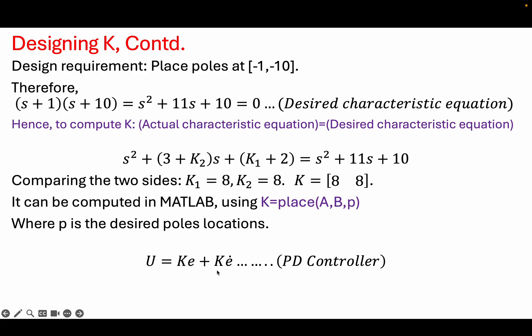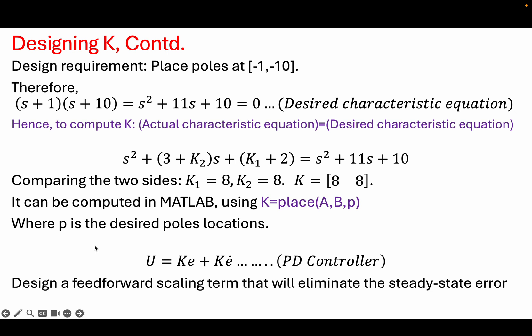Going back to our design, a state feedback controller is analogous to a PD controller — it has a proportional part and a derivative part. If the steady state gain of the closed loop system is not 1, we will not achieve zero steady state error because we are not integrating the error over time. We therefore need to design a feed-forward scaling gain that will eliminate the steady state error.